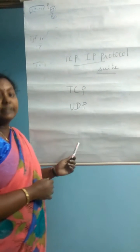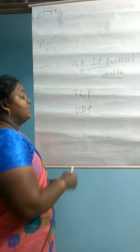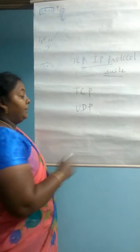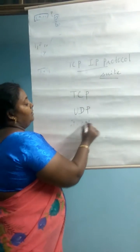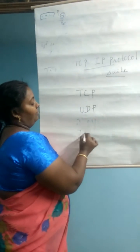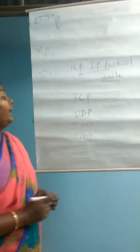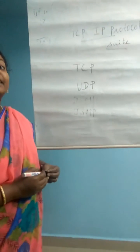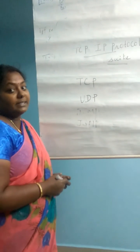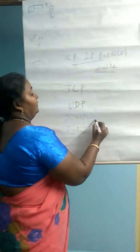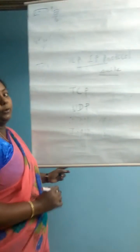In the internet layer we have 4 protocols: ICMP, IGMP, ARP, and RARP. ICMP is nothing but internet control message protocol. IGMP is nothing but internet group message protocol. ARP is nothing but address resolution protocol.